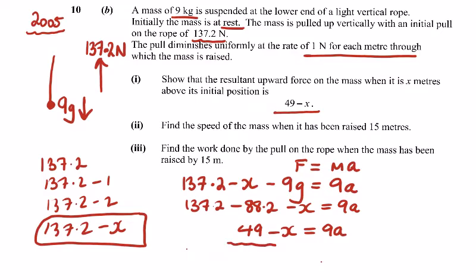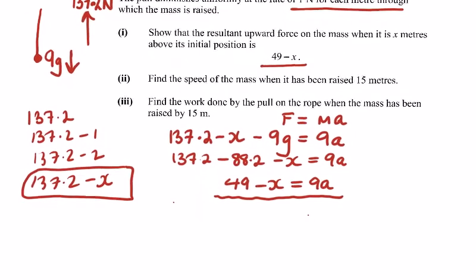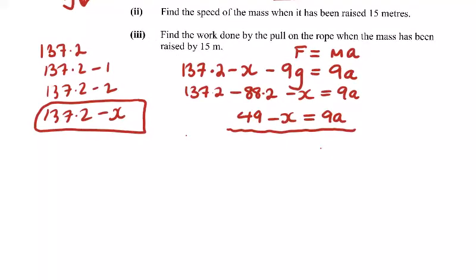QED for this one. Find the speed of the mass when it's been raised to 15 meters, so we're dealing with v and s. We need a, which is 49 over 9 minus x over 9.